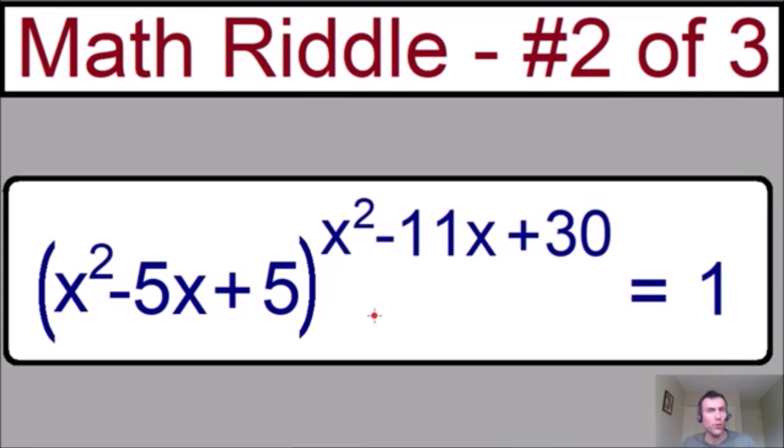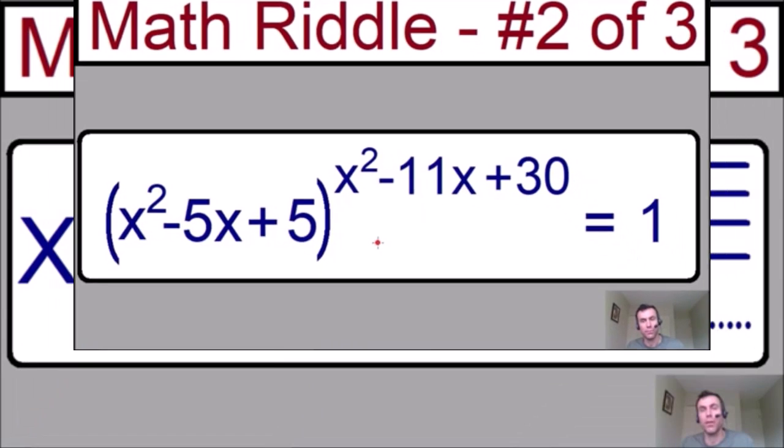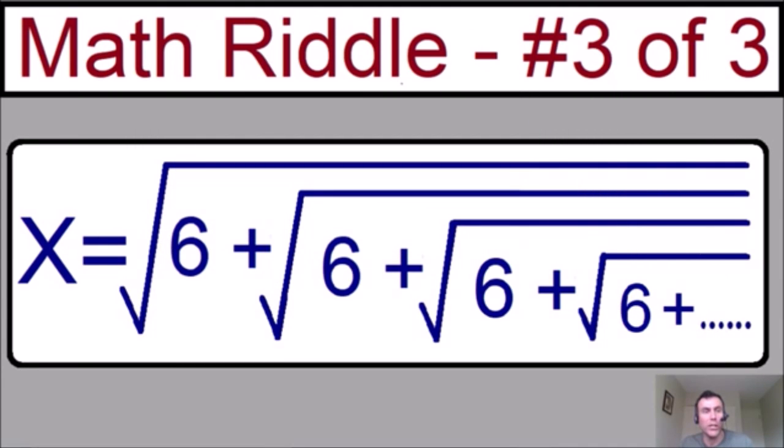Let's move on to riddle number three. For riddle number three, we have an equation that has a never-ending square root. x is equal to the square root of 6. And inside this square root, we have another square root being added, the square root of 6. And inside of that square root, we're also adding another square root of 6. This goes on forever and ever.